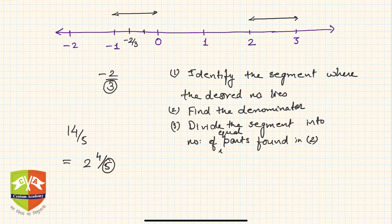I have to put 4 points to create 5 equal parts: 1, 2, 3, 4. Now, the segment between 2 and 3 has been divided into 5 equal parts.